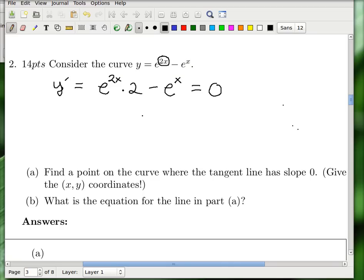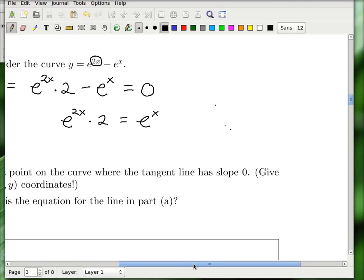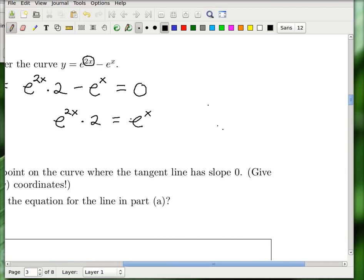So now it's just an algebra problem, and you're going to say, Professor Johnson, it is a crappy algebra problem because it's a little bit weird. So let's move e to the x over to the other side of the equal sign here. And so what can I do now? I'm going to divide both sides by e to the x.